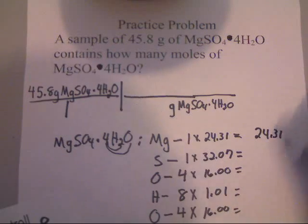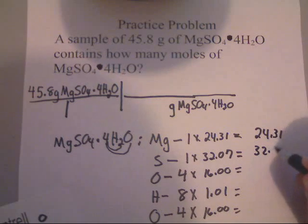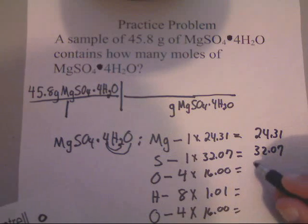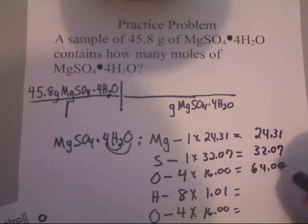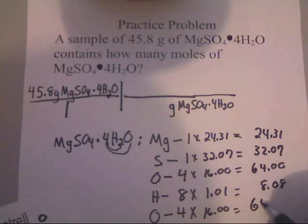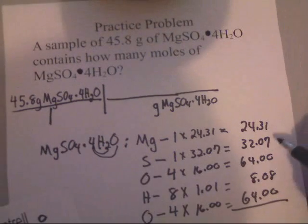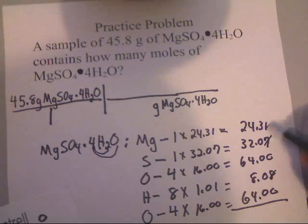Alright, let's do a bunch of multiplication, and we'll add these up. This is 24.31. This is 32.07. This is 4 times 16, 64. This is 8.08, and once again, this is 64.